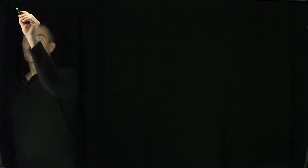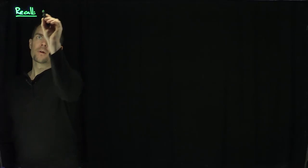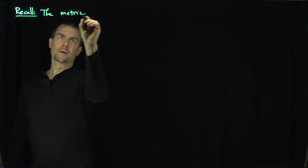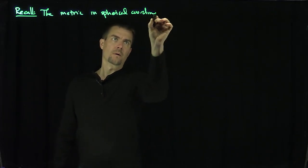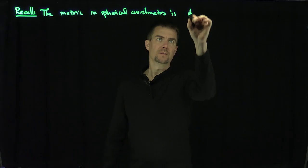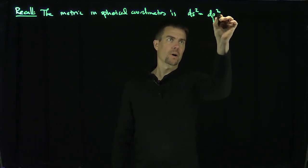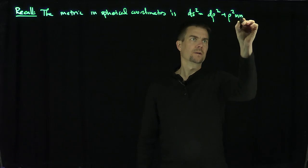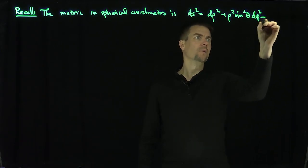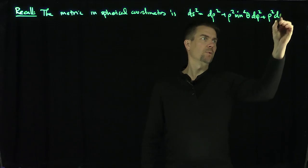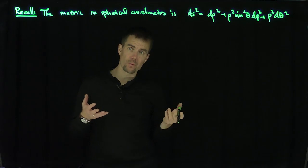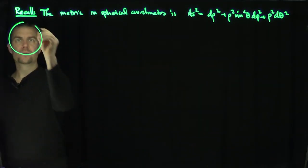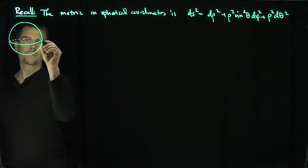Hello, students. In this video, we'll find the geodesics on a sphere. Let's recall the metric in spherical coordinates: ds² = dρ² + ρ² sin²θ dφ² + ρ² dθ². In this problem, we're going to focus on just the unit sphere, corresponding to ρ = 1. Here's our unit sphere — that's ρ = 1.